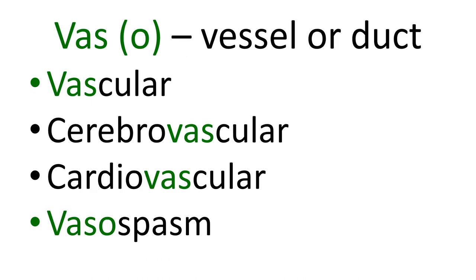The prefix vas- or vaso- means to do with a vessel or duct. So vascular means to do with blood vessels — a tissue might be highly vascular, like the brain, liver, or kidneys, which contain a lot of blood vessels. If these organs are damaged there can be torrential haemorrhage because they are very vascular. Alternatively, other tissues are relatively avascular, such as subcutaneous adipose tissue, which contains relatively few blood vessels and is therefore less associated with significant haemorrhage.